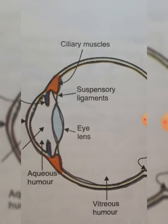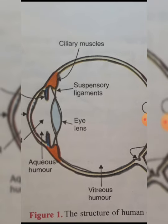So the focal length of the eye lens can be changed, but the focal length of the camera lens cannot. This was all about the construction and working of the human eye. Thank you, students.